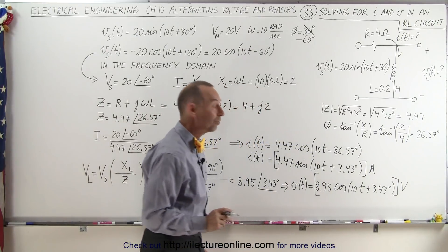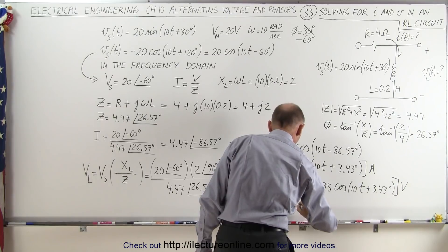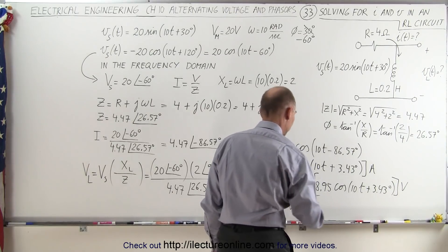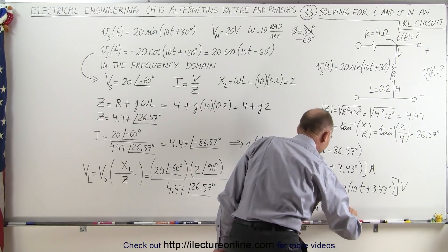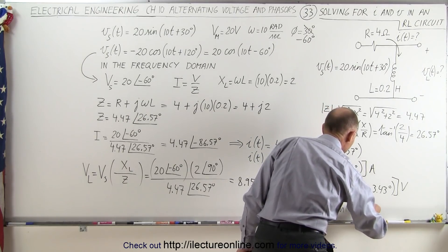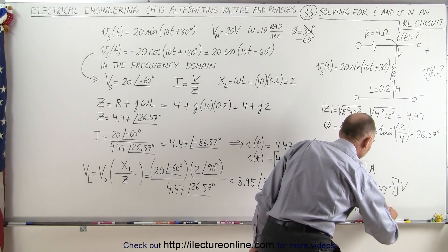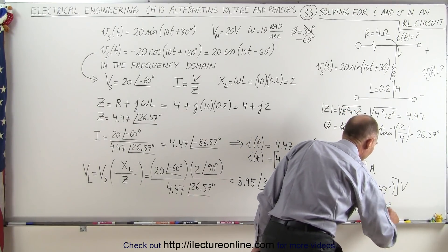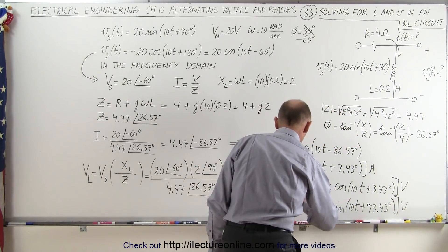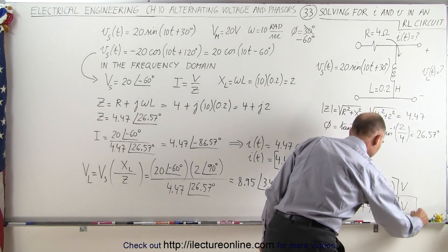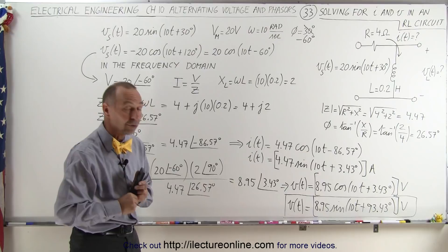Since we started with the source voltage in terms of the sine, let's reconvert. Adding 90 degrees to the phase angle, the voltage as a function of time is equal to 8.95 times the sine of 10t plus 93.43 degrees, in volts. This is probably the best final answer, since we started with the source voltage in terms of the sine.